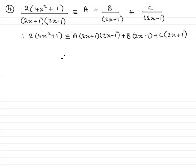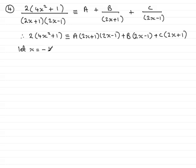Now what we want to do is make one or more of these brackets equal zero, which makes the solution very quick and easy. So if I choose x equals minus a half, it would take out this particular term because that bracket would be zero.